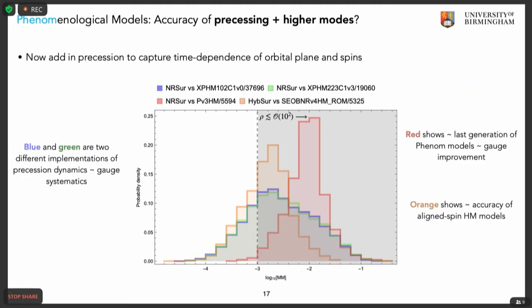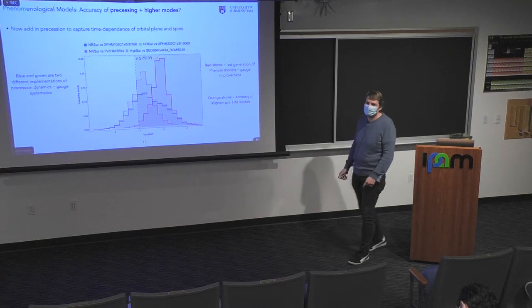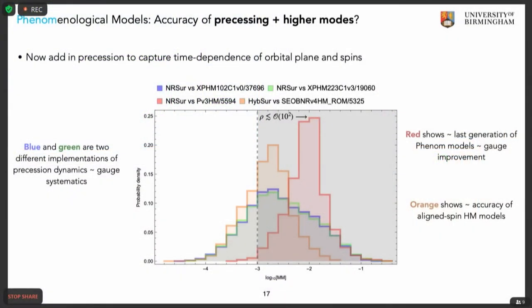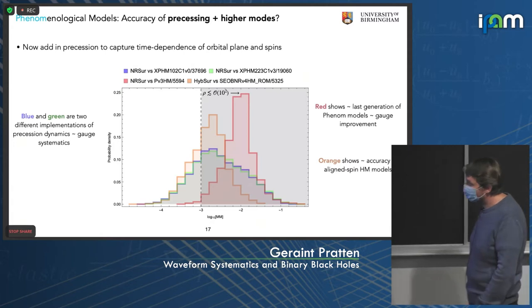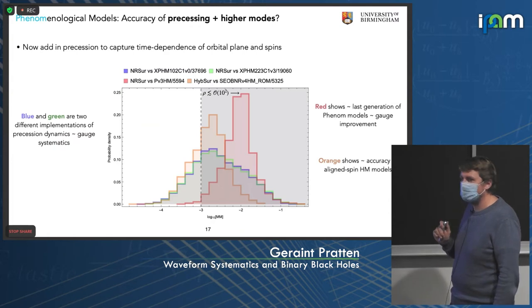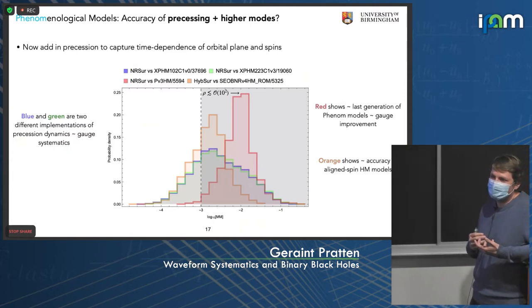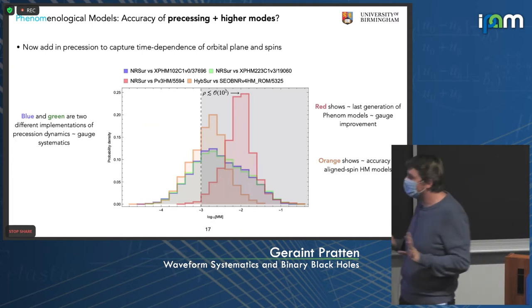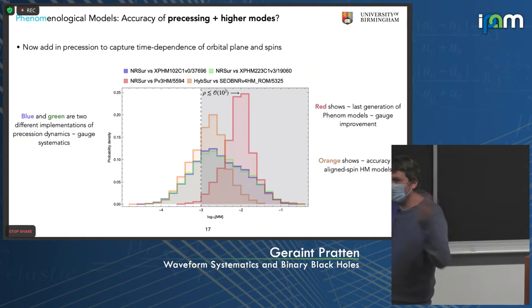Coming back to the distinguishability criterion: mismatches around 10^-3 for the bulk of waveforms means we should be safe for SNRs on the order of a few tens, maybe up to 100 if we're lucky in the parameter space. If you have mismatches around 10^-2 to 10^-1, we're going to have problems even for a binary around SNR 10–20. Also, where these models break down in the parameter space is not uniform — mismatches degrade worst especially at high spins. This means there's already a preferential selection for binaries with lower spins providing some safety net.